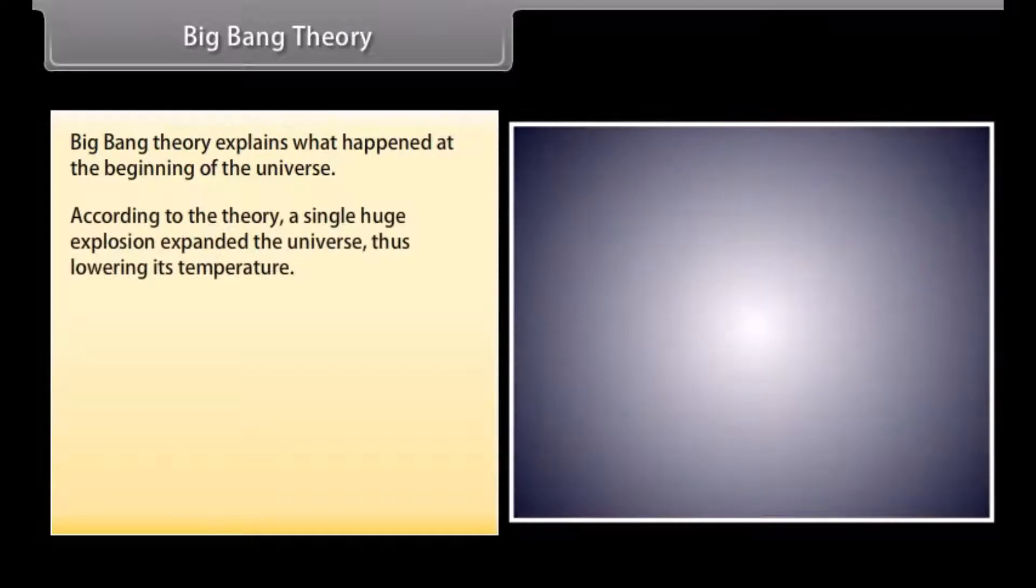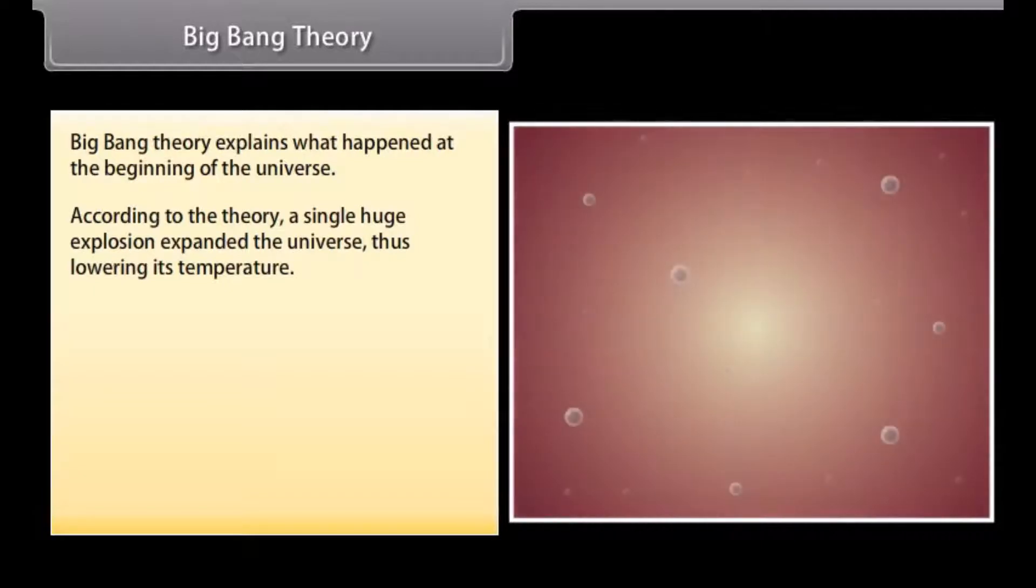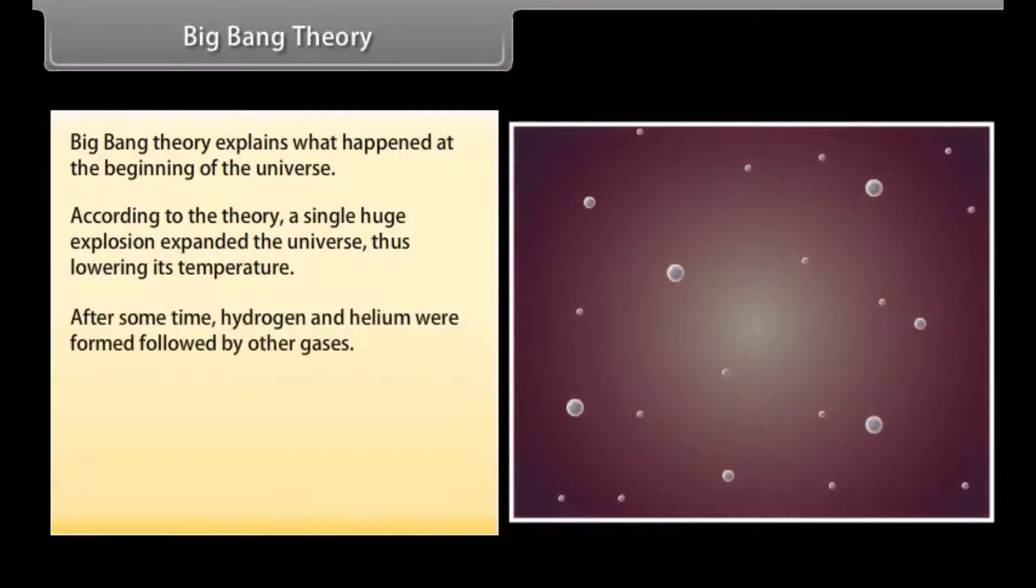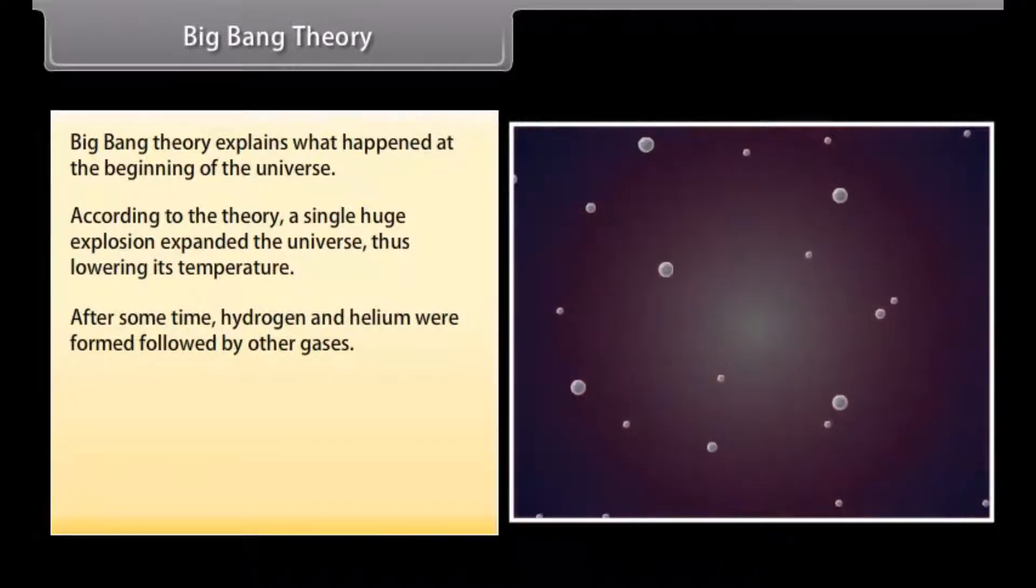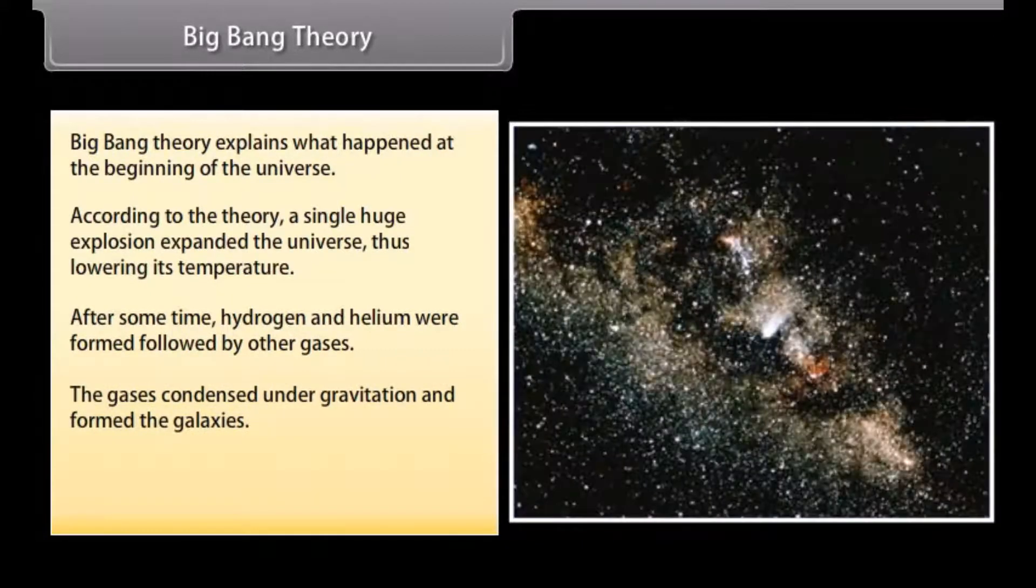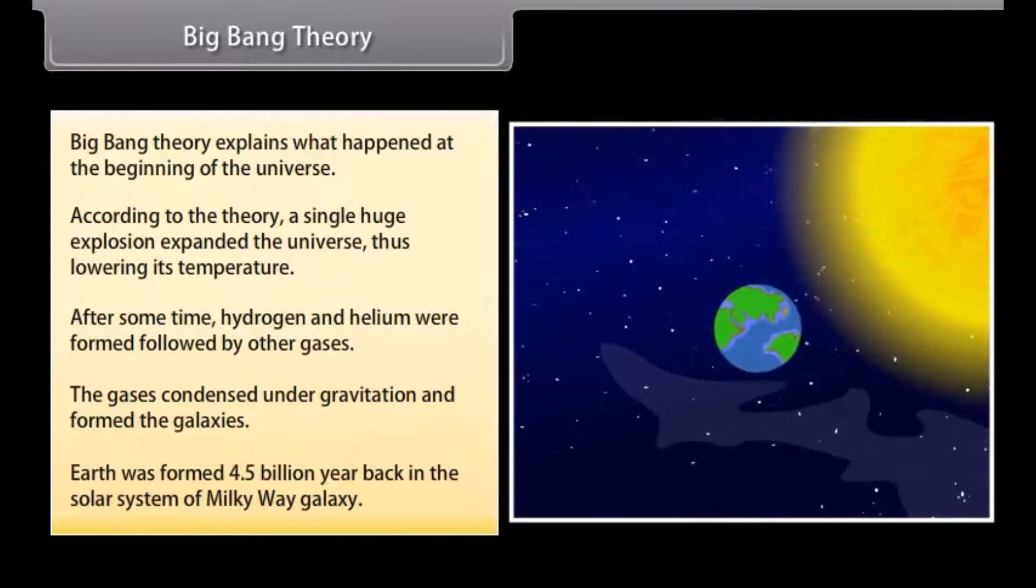Big Bang Theory. Big Bang Theory explains what happened at the beginning of the universe. According to the theory, a single huge explosion expanded the universe, thus lowering its temperature. After some time, hydrogen and helium were formed, followed by other gases. The gases condensed under gravitation and formed the galaxies. Earth was formed 4.5 billion years back in the solar system of Milky Way galaxy.